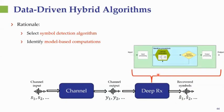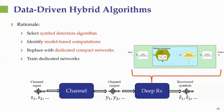Now let us go to data-driven hybrid algorithms, where the rationale differs from previous approaches that used a deep network — either conventional or unfolded — to carry out complete symbol detection. Here the rationale is to select a symbol detection algorithm suitable for the specific channel and problem, identify which computations require knowledge of the underlying model, replace those computations with dedicated compact networks, and train only those components so the overall algorithm can operate in a data-driven fashion.